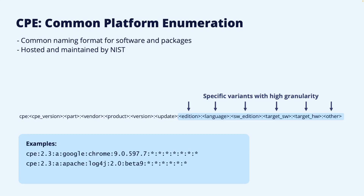The second example is similar, but here the vendor is Apache and the product is log4j, which is a well-known library. The CPE specifies here the version 2.0 and the update which is beta 9. The third example identifies a very specific version of Windows. The vendor is Microsoft and the product is Windows 7. Since the version is included in the product name, it does not have a specific version, but the update is given by SP1, which is Service Pack 1. There are no specific values for edition and language, but the software edition is given as Enterprise. So it is Windows 7 Enterprise with Service Pack 1. Finally, the target hardware is x64, so it identifies the specific Windows 7 version, but only for 64-bit processors.